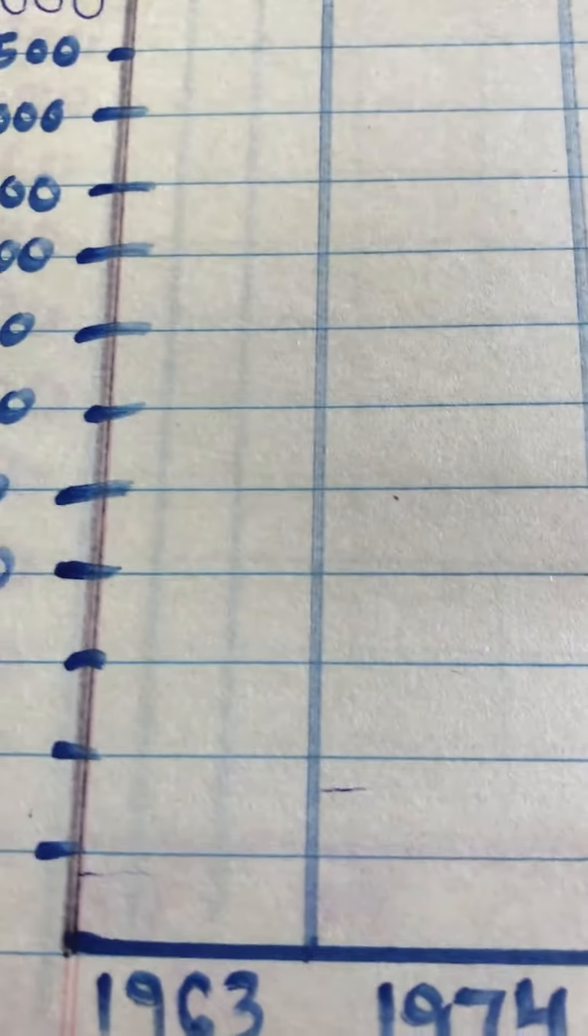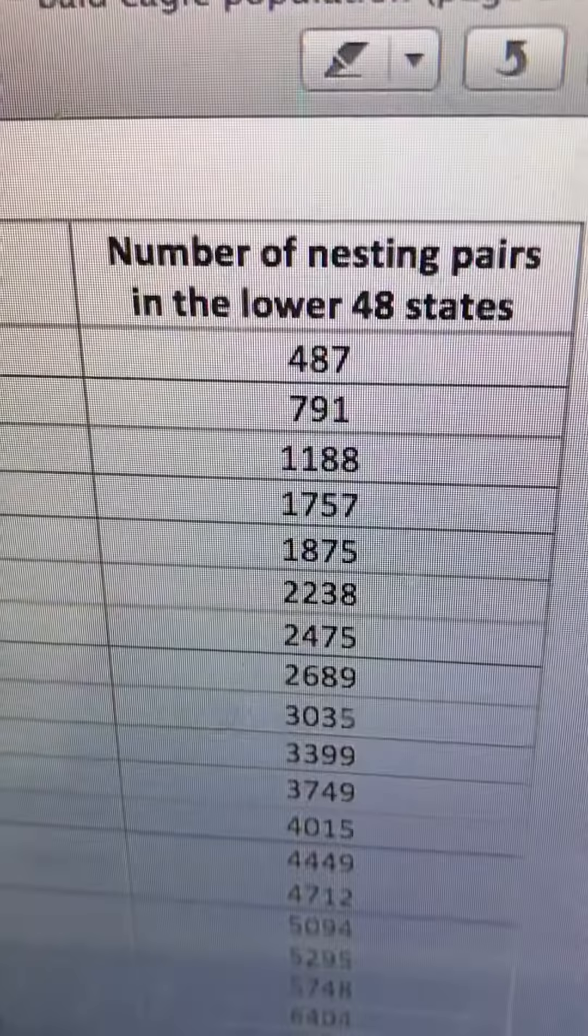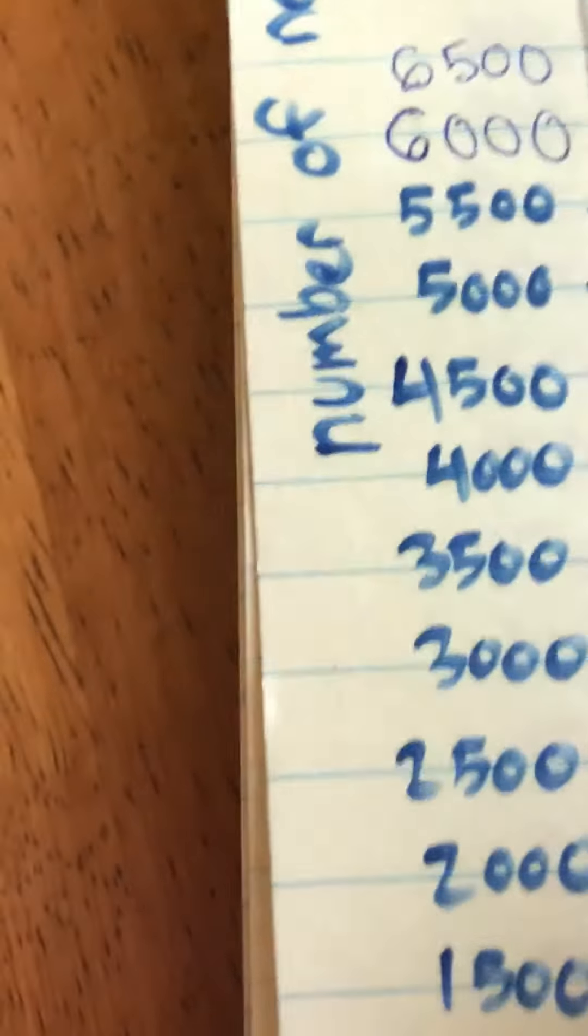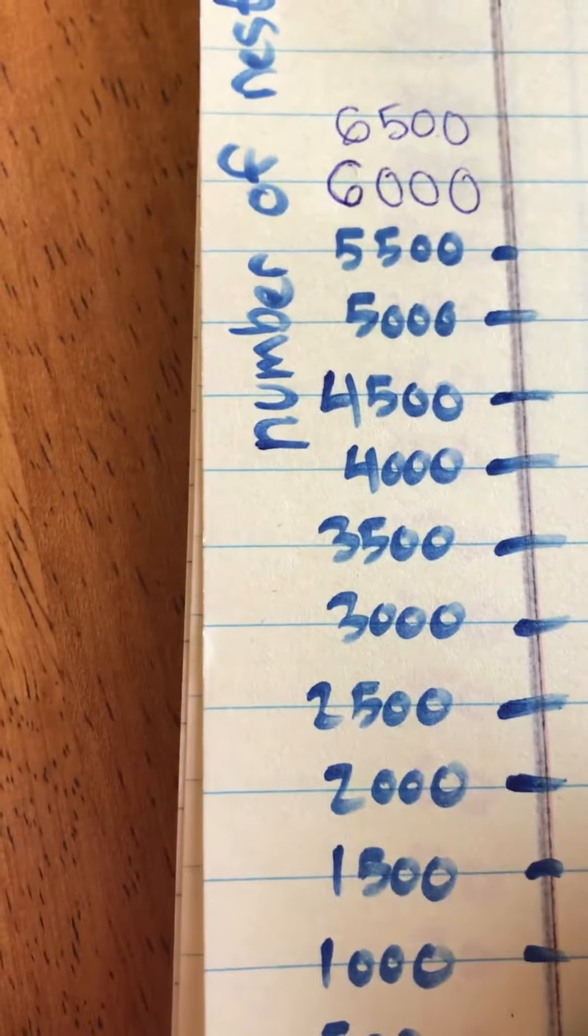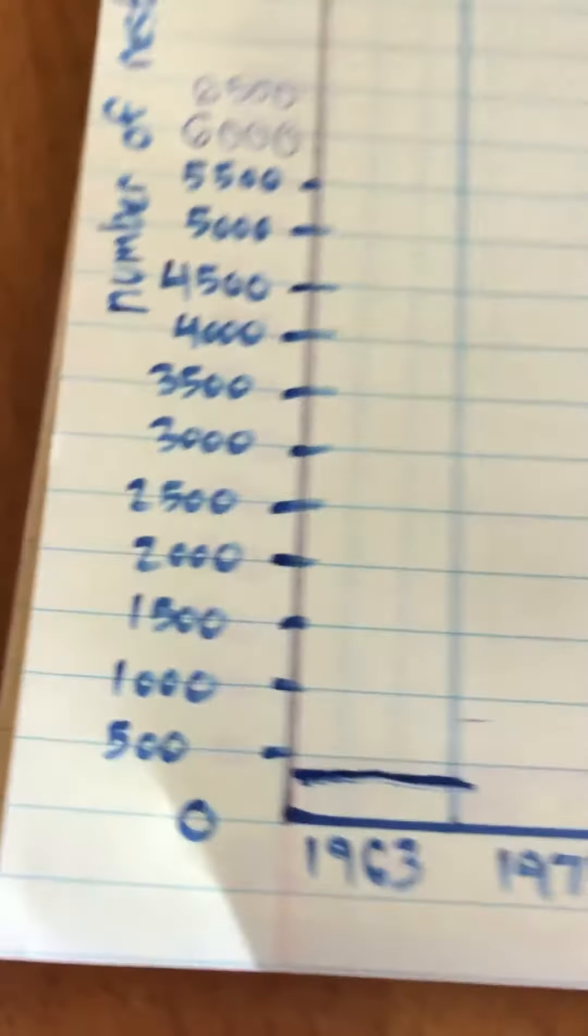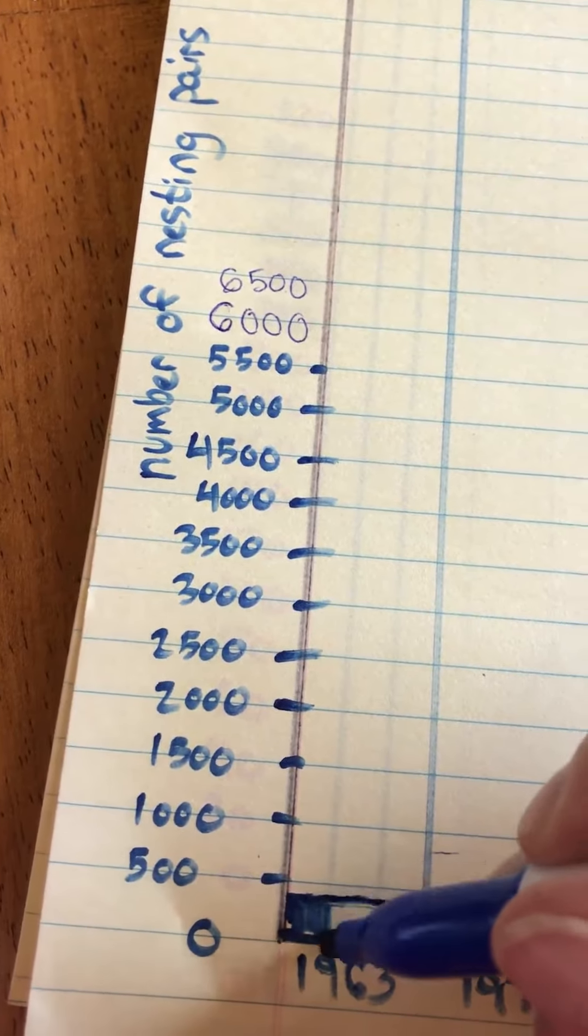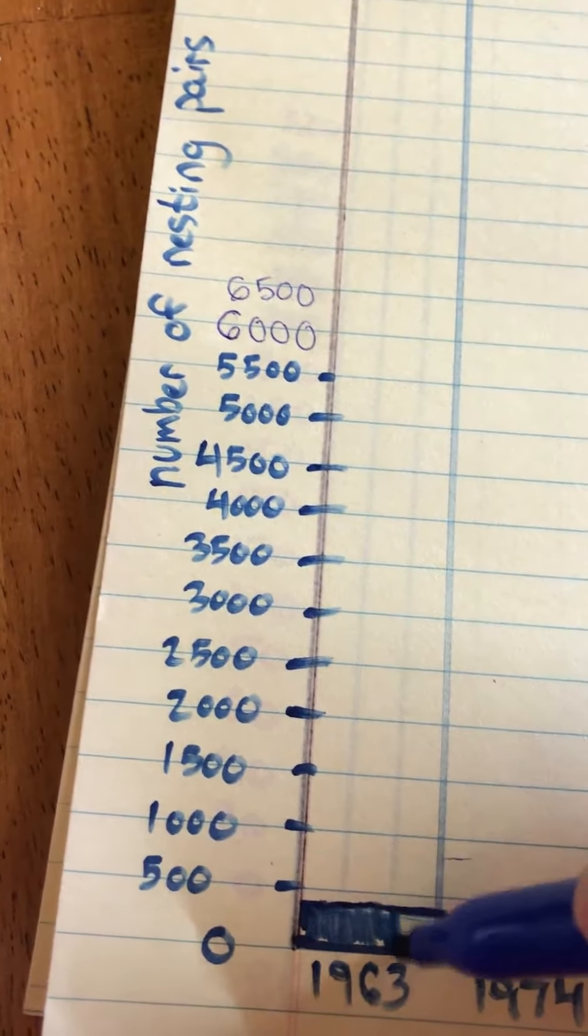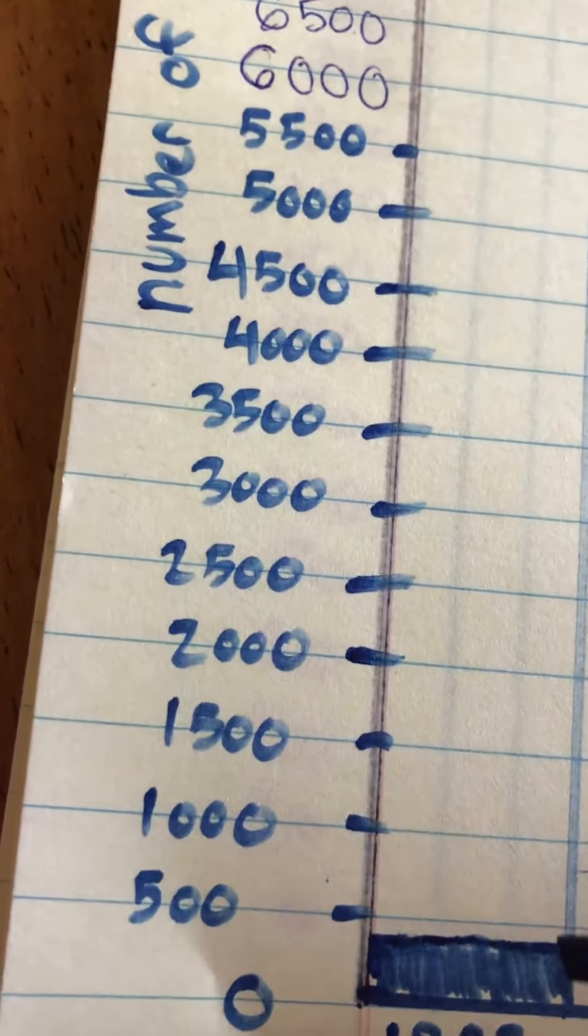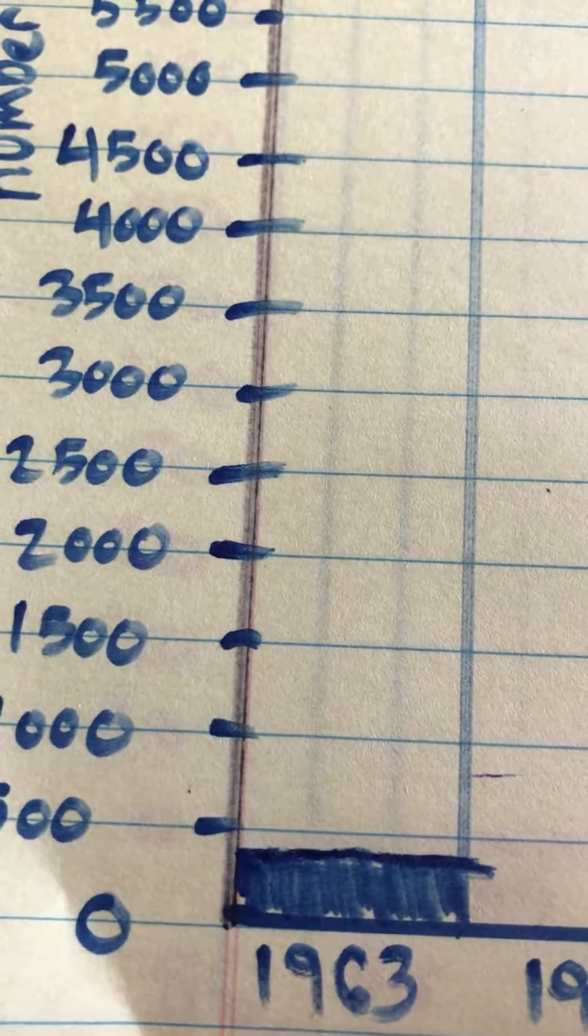Okay so let's make a bar graph for 1963. So I look at my data here for 1963. It's 487 nesting pairs. There weren't very many back then because of some chemicals that the United States was using at the time was very very hard on raptors, birds of prey. So we were very worried about eagles. They were extremely endangered. Now I've chosen to put that number just under 500 because I can't get to exactly 487. But I know 487 is pretty close to 500. So I put my bar there.